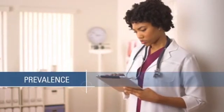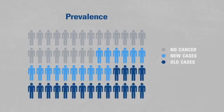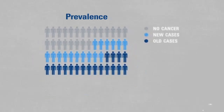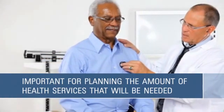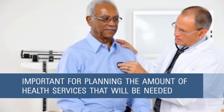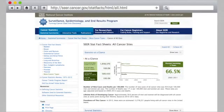If you want to know how many people are currently living with cancer in the US, we use a statistic called prevalence. Prevalence is slightly different from incidence because it measures both new and old cases rather than just new cases. Prevalence combines measures of incidence and the likelihood of surviving cancer, which is especially important for planning the amount of health services needed to care for cancer patients.